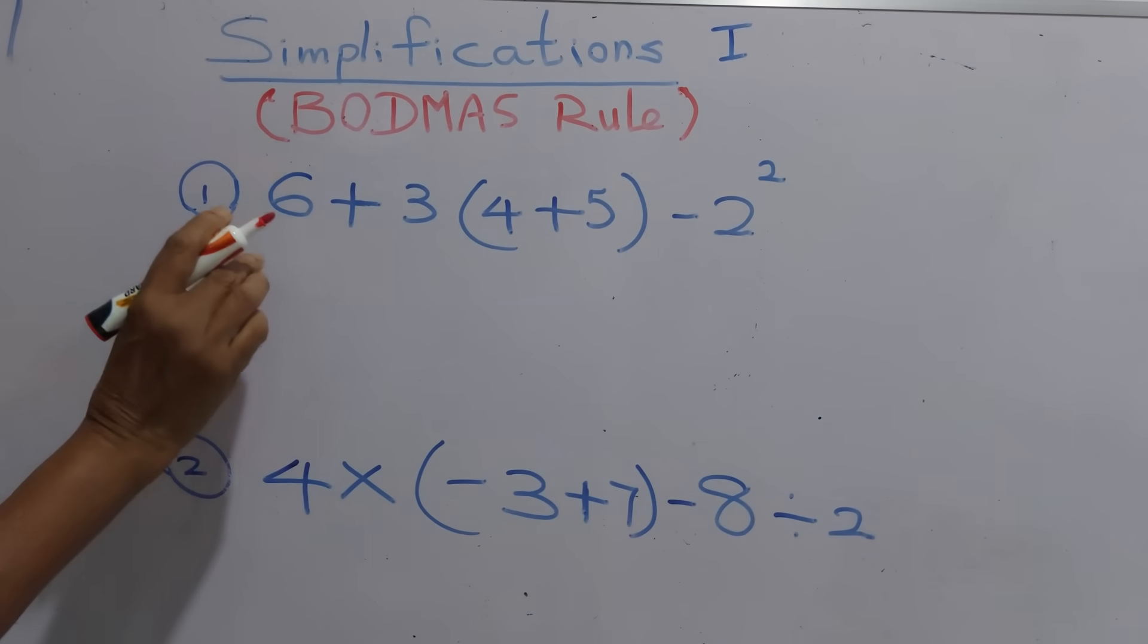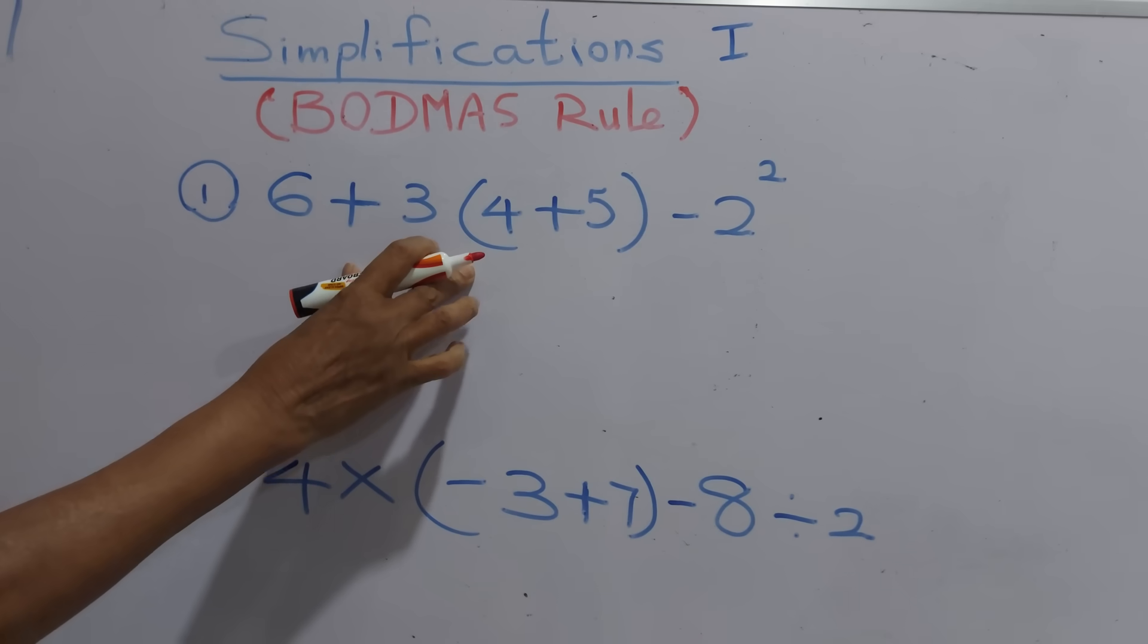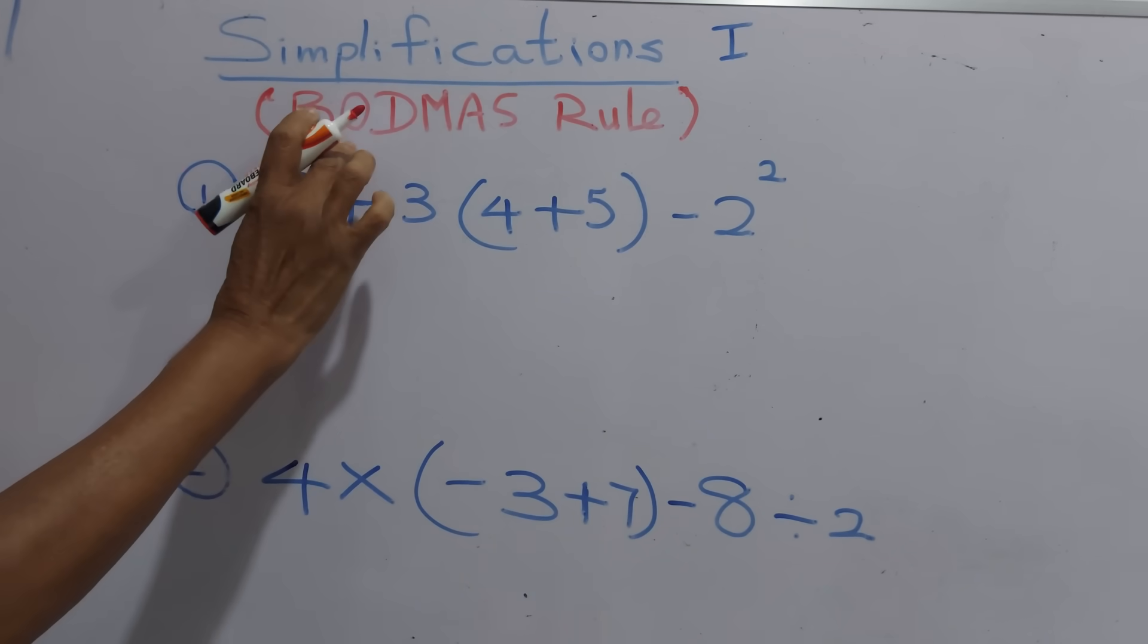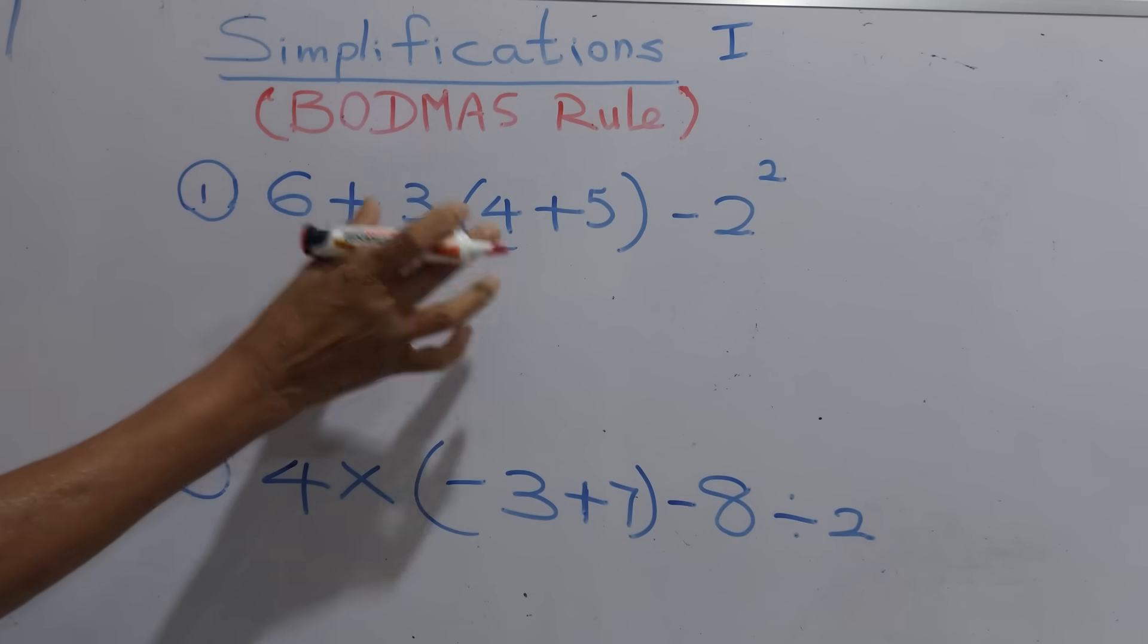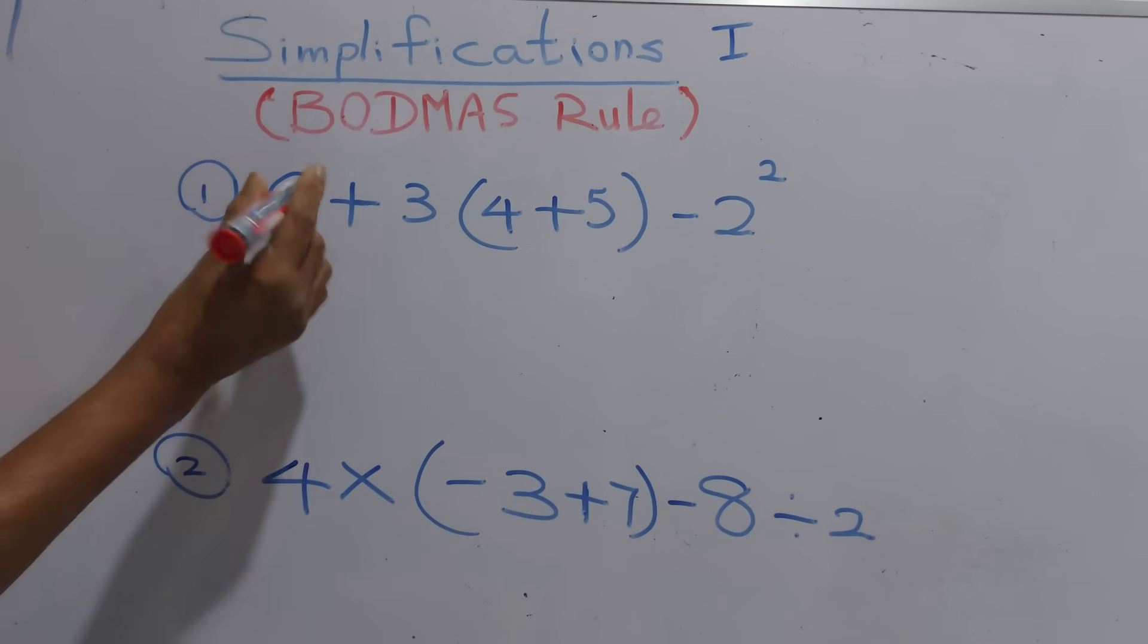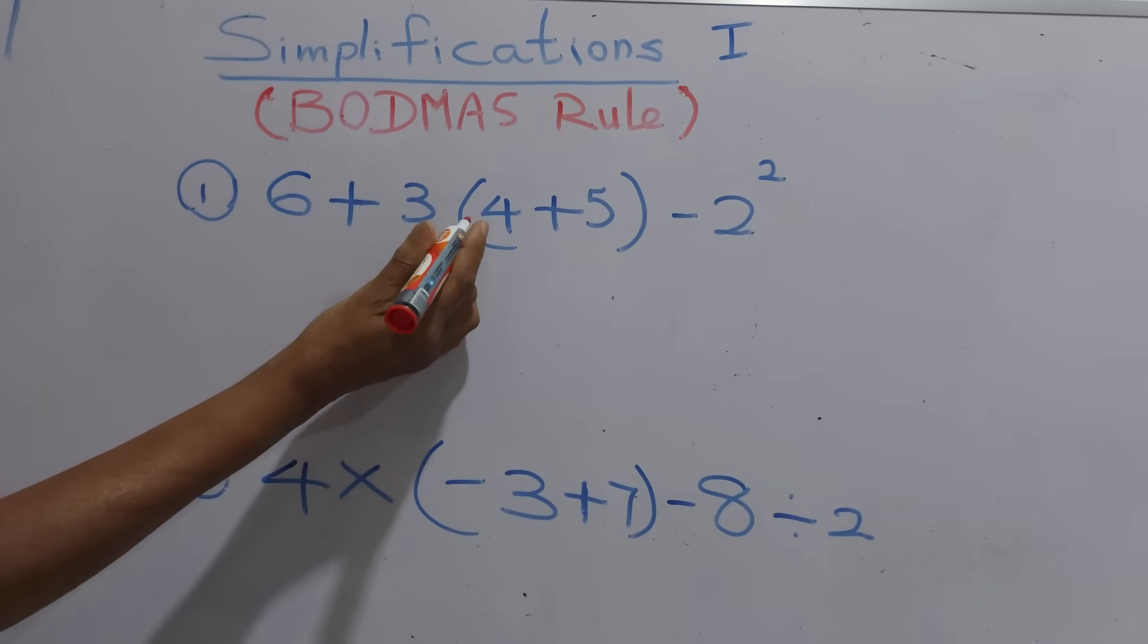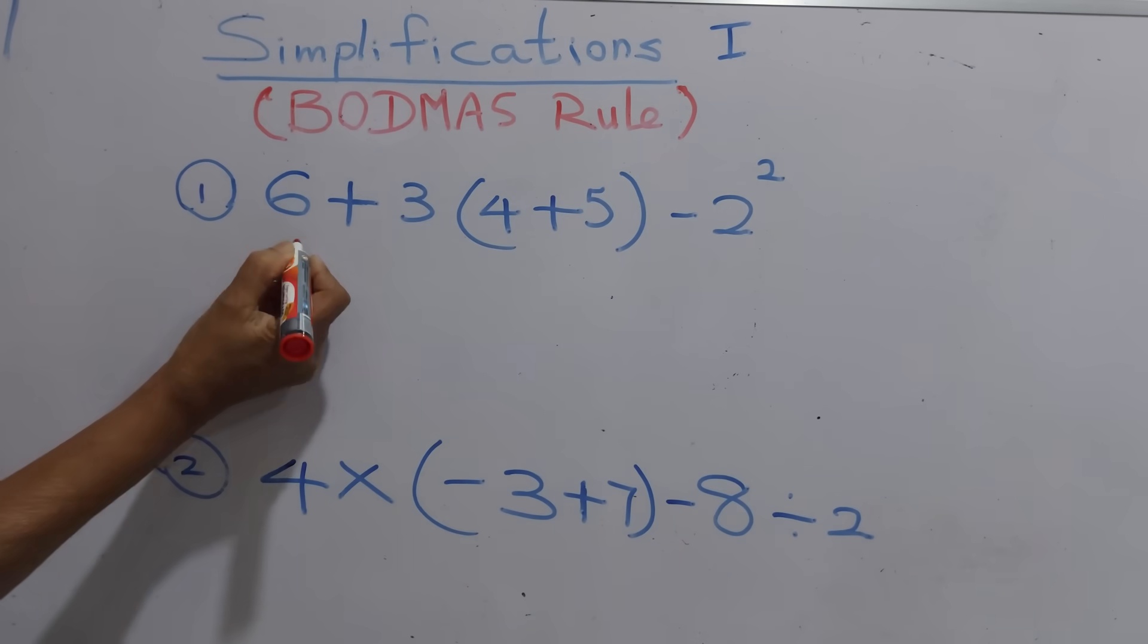Welcome back to basic maths. Today we are solving an interesting sum using the order of operation called BODMAS rule. This is the rule we are going to use to solve this sum. We have to apply the first step as B, which means brackets. We have to remove the brackets in the first step.